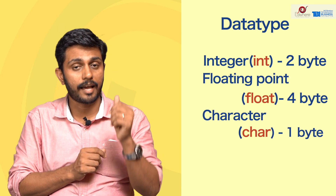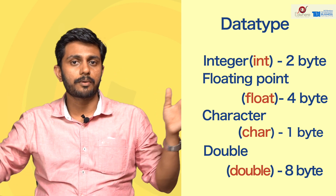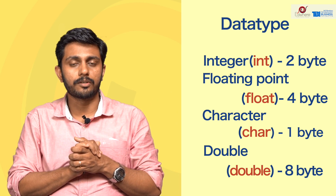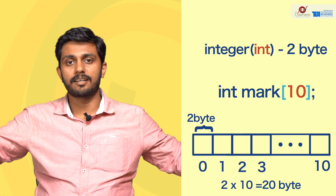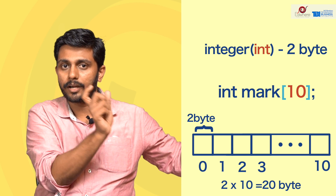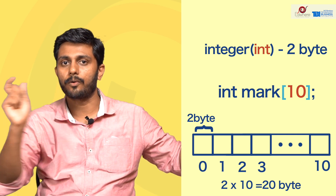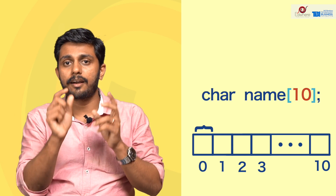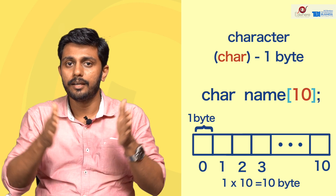Now let's check the data types and their memory sizes. In this case, integer memory size is 2 bytes, float is 4 bytes, character is 1 byte, and double is 8 bytes. Memory sizes are allocated in sequence. So if you declare an integer array of size 10, it is allocated 2 bytes each, totaling 20 bytes. If you declare a character array of size 10, it is allocated 1 byte each, totaling 10 bytes.